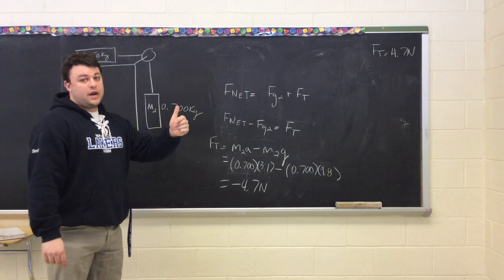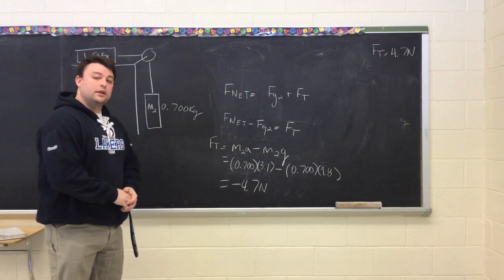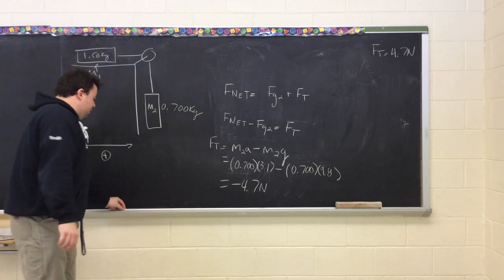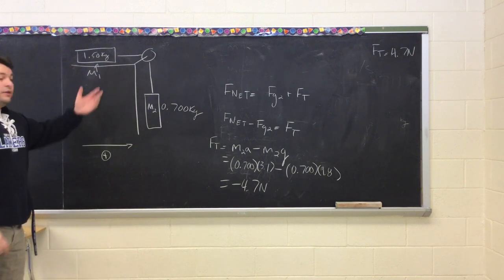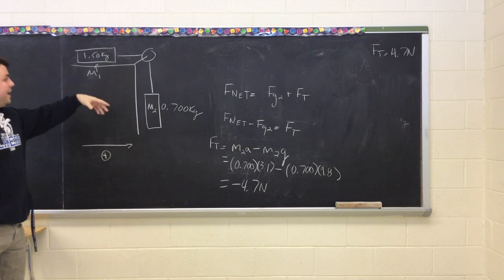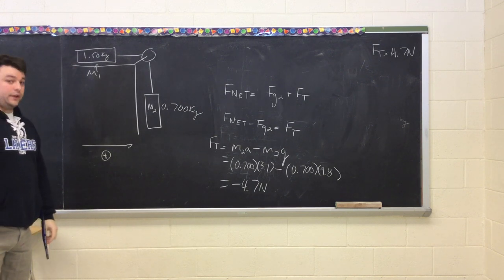Opposite direction equal magnitude. We are good. That's how you solve for a force tension question with two masses and a pulley and no friction.